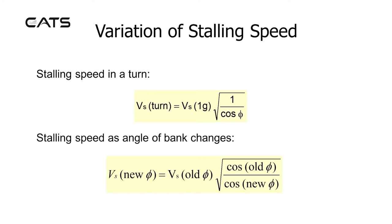Variation of stalling speed. Stalling speed in a turn — VS turn — equals VS in the 1G environment multiplied by the square root of 1 over cosine of bank angle. As the bank angle changes, the stalling speed will also change: with an increased bank angle it will increase, and with a decreased bank angle it will decrease.